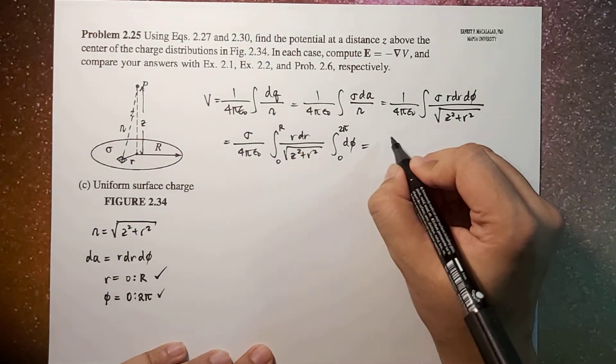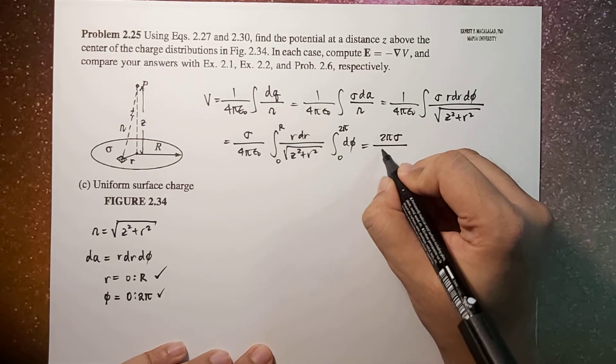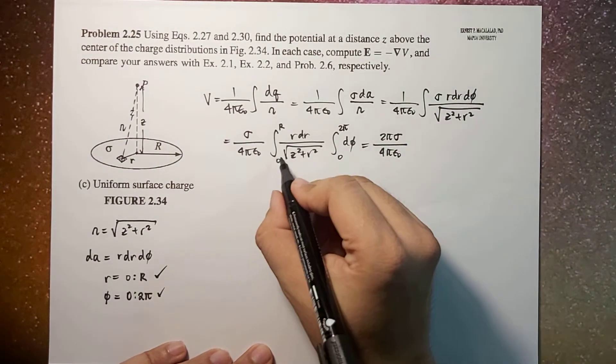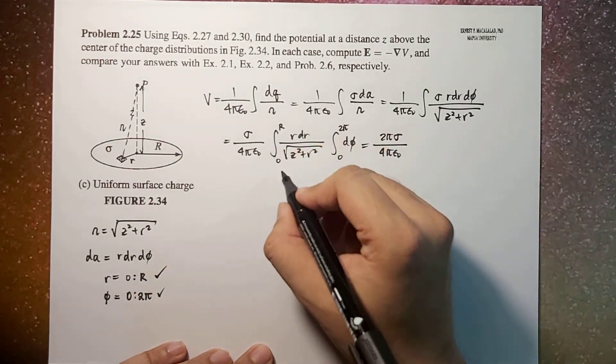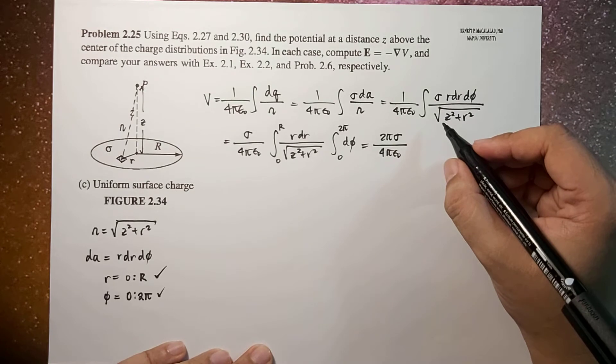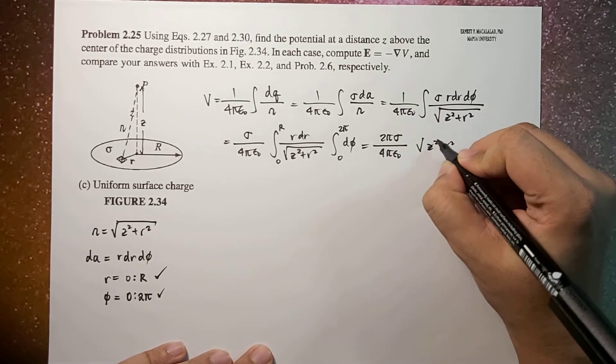So this becomes 2π sigma over 4π epsilon naught. The integral of this, you can solve by yourself. The result would be square root of z squared plus r squared.